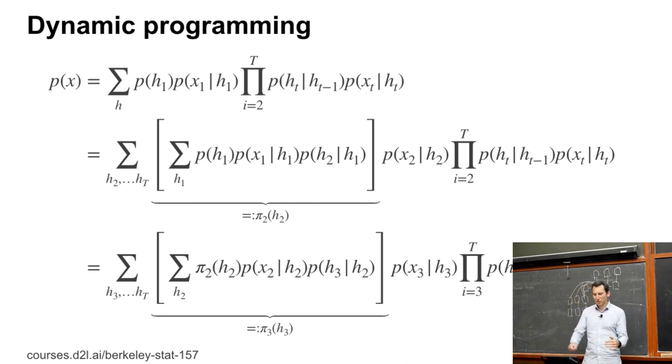And so this is a simple function, I can just tabulate it, what P of H2 should assume. So then I write it out as a sum over H2 and I pull out all the terms involving H2. So we have π_2 of H2, P of X2 given H2 times P of H3 given H2. And we sum over all the H2's and this gets abbreviated into π_3 of H3. And I can just peel off one term after the other as I move from the left to the right.